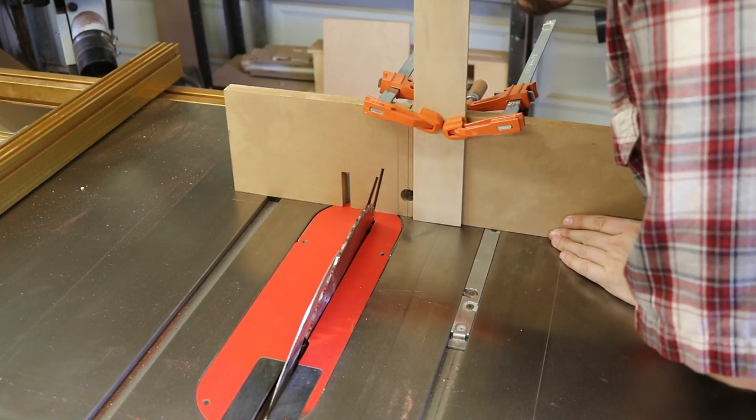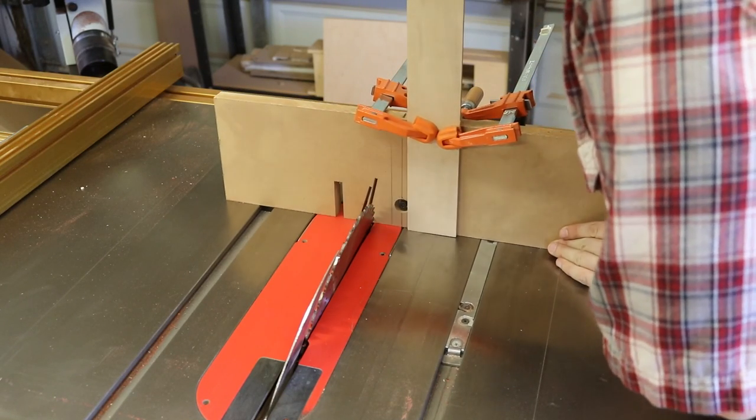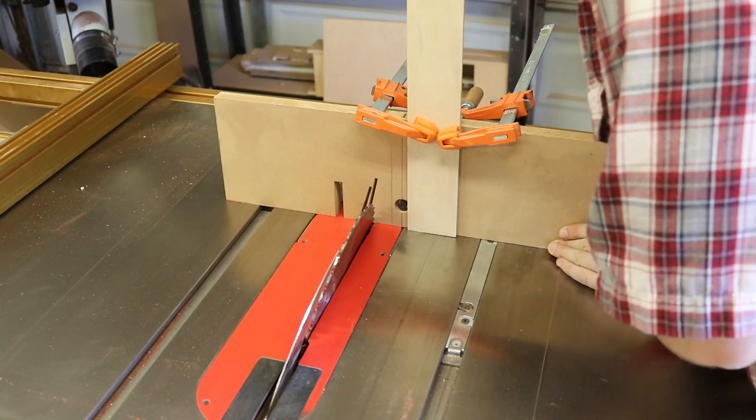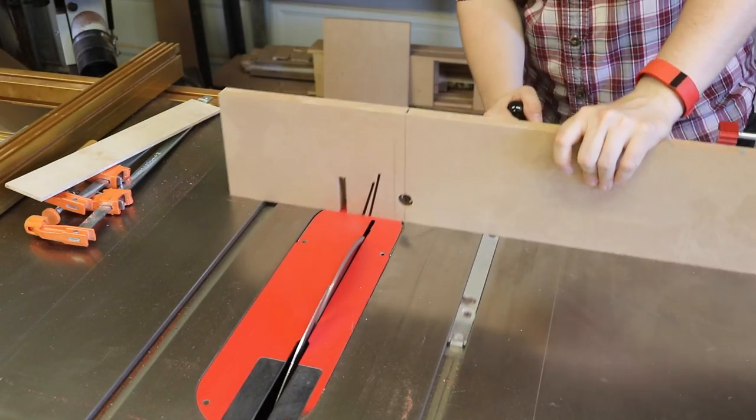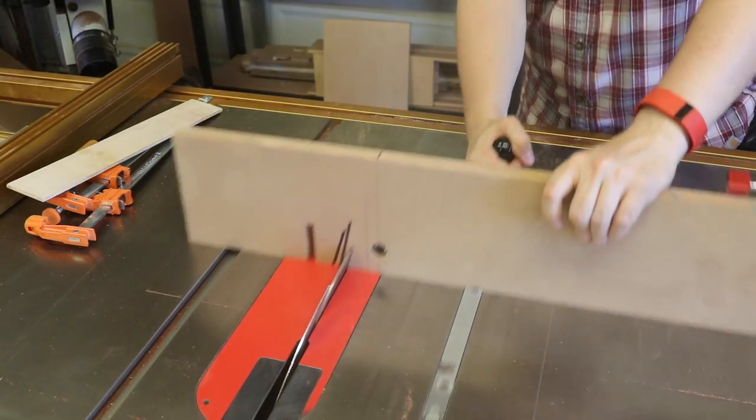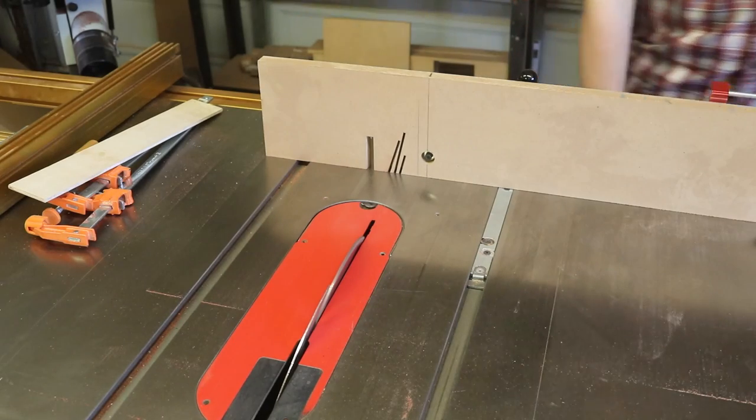And again, I'm going to adjust the sub fence on my miter gauge so that I have a brand new, fresh place to cut. And with my blade lowered, I'll make a pass into my sub fence, so I know exactly where the blade enters the fence.